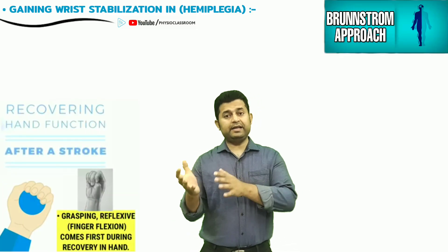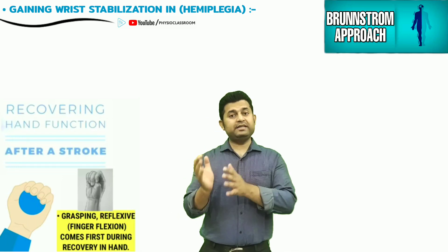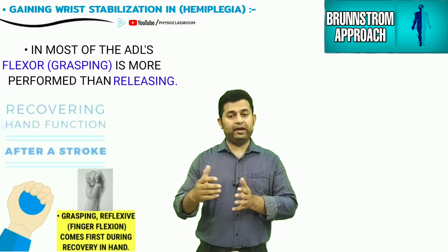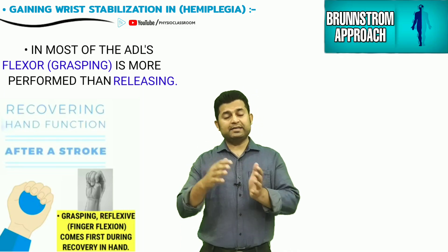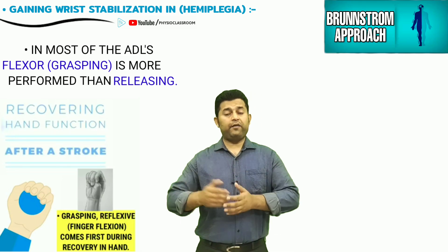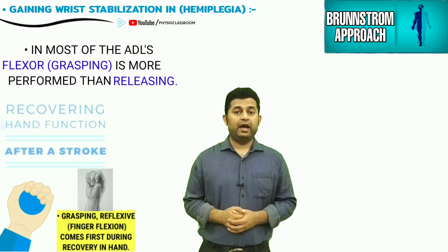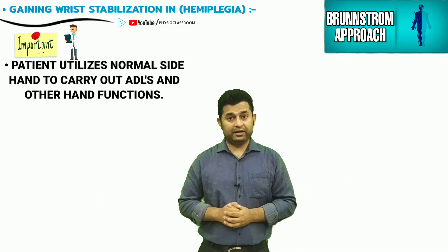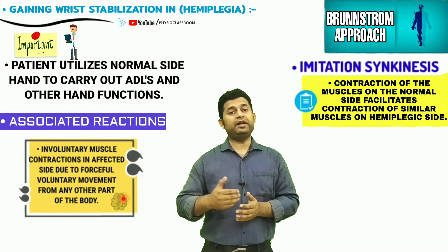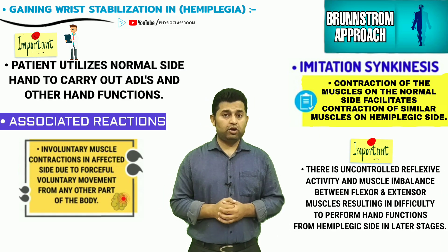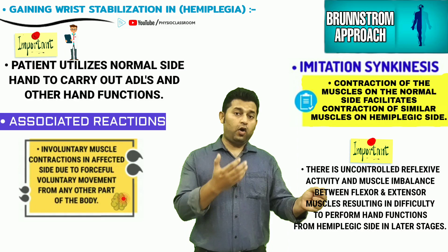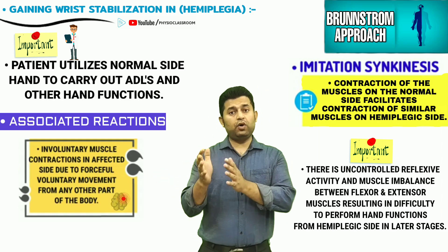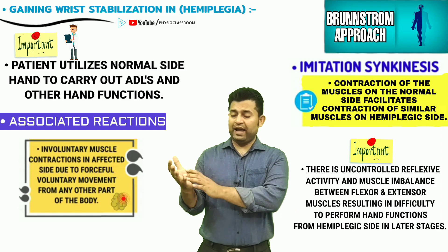The hemiplegic hand has a tendency to become spastic in the flexor direction. Normally, our hand is flexor dominant — daily living activities comprise more grasping than releasing. After stroke onset, when there is little function in the hemiplegic hand, the patient uses the normal hand for all activities. Because of associated reactions and imitation synkinesis, the flexor dominant nature and use of flexor muscles on the normal side results in reflexive, uncontrolled stimulation of the flexor muscles of the hemiplegic hand, creating an early imbalance between flexor and extensor stimulation.